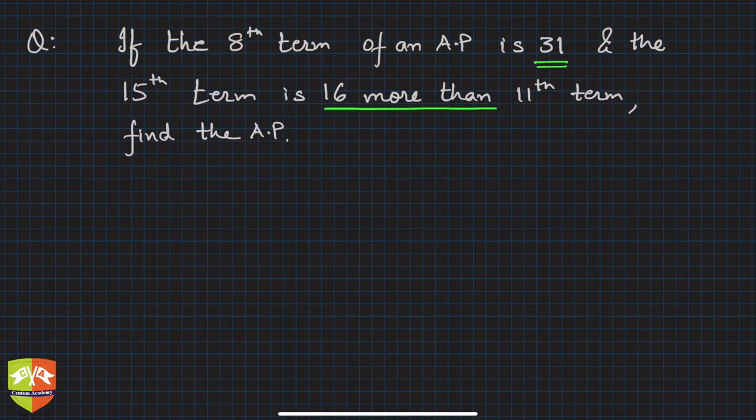16 more than 11th term. So they are giving you some kind of relationship between the terms. You have to find the AP. What does finding the AP mean? It means you first have to find out the first term and the common difference, and show some terms of that AP as well.